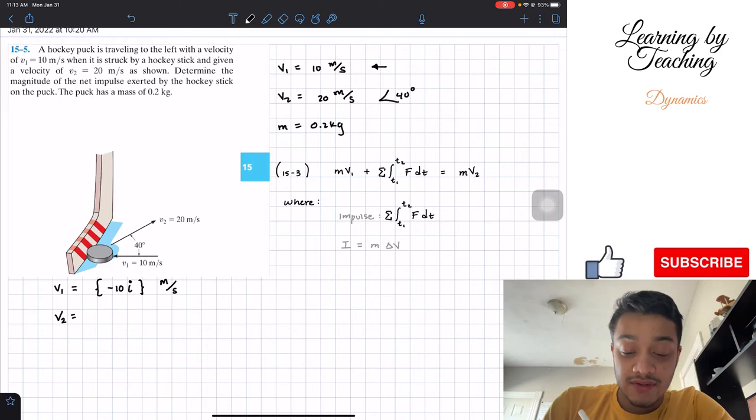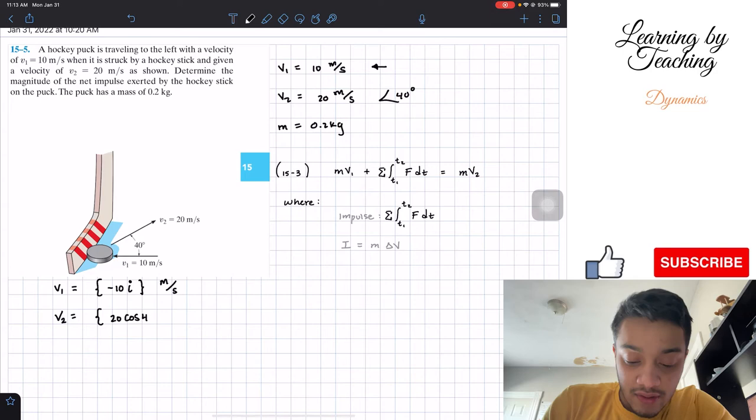For velocity 2, the magnitude is 20. The x component of this will be going to the right. It will be 20 multiplied by the cosine of this angle, which is 40 degrees. Since it is going to the right, it will be positive and in the i direction.